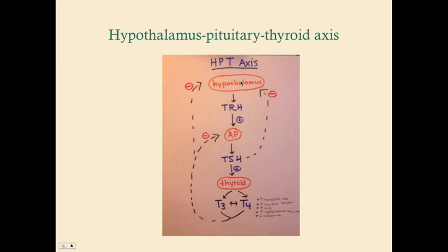The hypothalamus-pituitary-thyroid axis: the hypothalamus releases thyroid-releasing hormone, which tells the anterior pituitary to release thyroid-stimulating hormone. TSH stimulates the thyroid, which releases T3 and T4. T3 can be converted into T4. These thyroid hormones increase metabolic rate, cardiac output, heart rate, and sympathetic activity, and they also reduce appetite. T3, T4, and TSH have negative feedback effects on the hypothalamus and anterior pituitary.